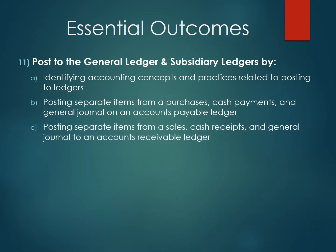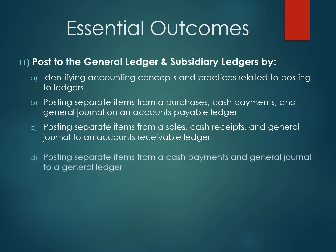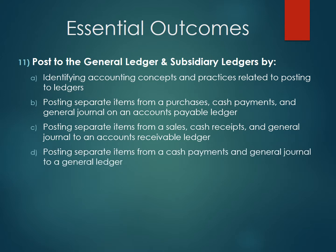C. Posting separate items from a sales, cash receipts, and general journal to an accounts receivable ledger. D. Posting separate items from a cash payments and general journal to a general ledger.